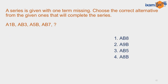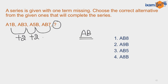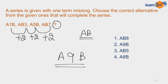An alphanumeric series is given and you have to find the missing term. The letters AB are static in all sets. Focusing on the number, the number increases by 2 in each step but changes its position alternately. Applying this logic, you get 9 as your number, placed in the middle of both letters. So A9B is the required answer, and option number 2 is correct.